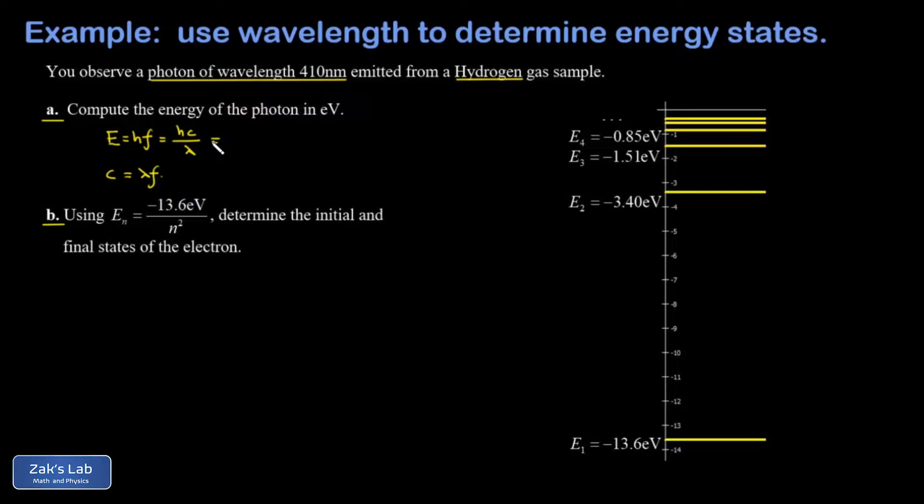And I'll post a link to the video where this was derived, but we have a very convenient approximation for hc. We can write this as approximately 1240 eV nanometers. And I did this because my wavelength is given in nanometers, and I want the energy of the photon in eV. So the nanometers cancel out, and I get 3.02 electron volts.